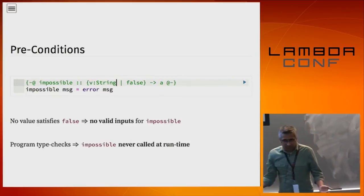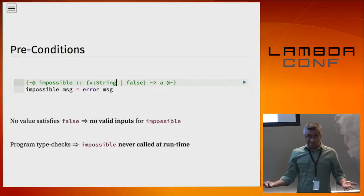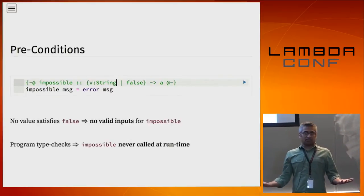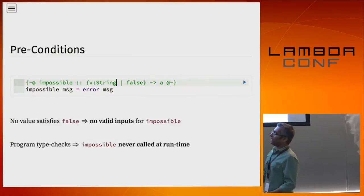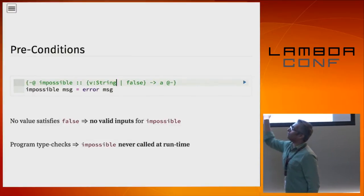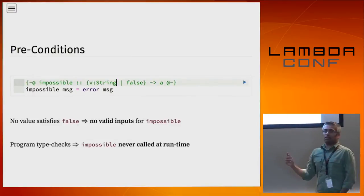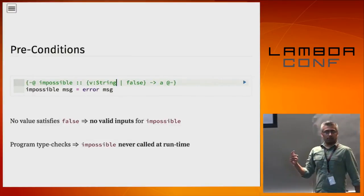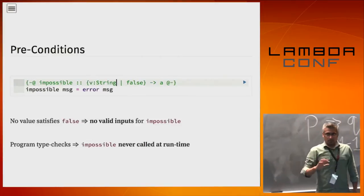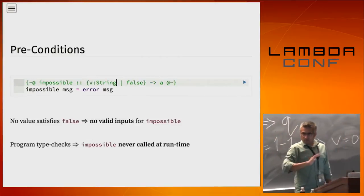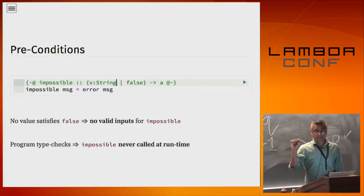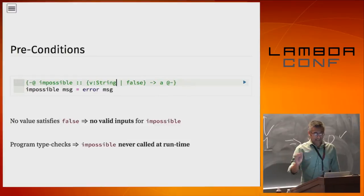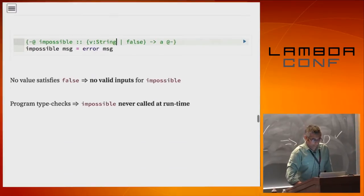What satisfies false? Nothing satisfies false. So you cannot call the function impossible. If your program type checks and it has impossible in it, you know that particular thing is dead code and will never happen.